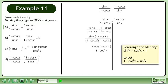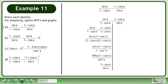Rearrange the identity sin²x plus cos²x equals 1 to get 1 minus cos²x equals sin²x. Replace 1 minus cos²x with sin²x. Cancel to get 1 plus cosx over sinx. The left side equals the right side, completing the proof.